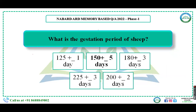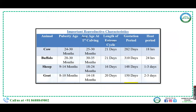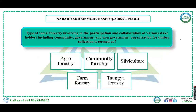What is the gestation period of sheep? This is a very simple question. The options were 125±1 day, 150±5 days, 180±3 days, 225±3 days, and 200±2 days. The right answer is 150±5 days. The gestation period of sheep is approximately 148 days, so according to the options that will be 150±5 days.